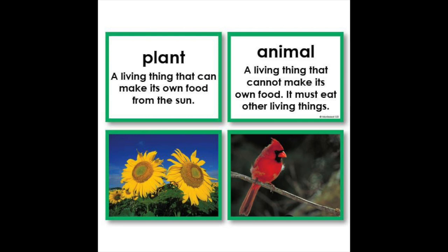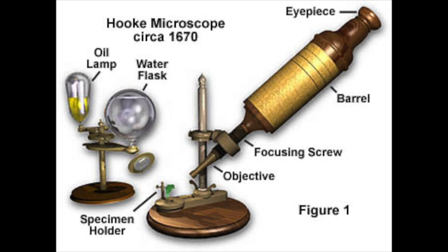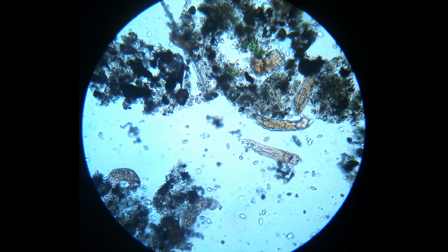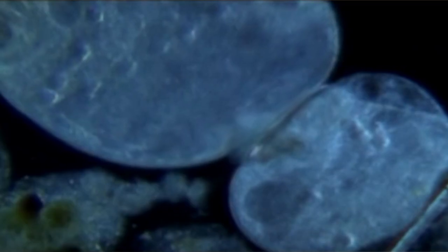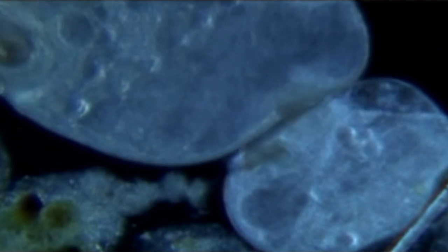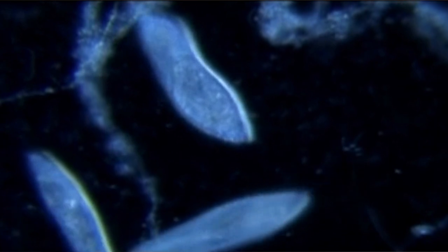For hundreds of years, all living things were classified as either plants or animals. Then in the 1600s, microscopes were developed. Through the microscopes, scientists saw tiny organisms no one had ever seen before. When more powerful microscopes were developed, scientists learned more about the organisms. By the 1970s, most scientists agreed that the tiny organisms didn't fit with either plants or animals. They put the organisms into a new kingdom, the Protists. As scientists learned more about the cells of organisms, they added kingdoms for Fungi and Monera.